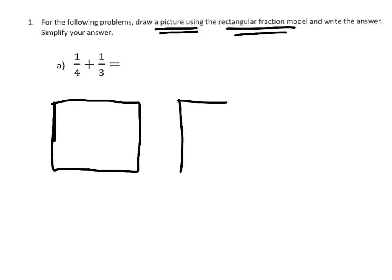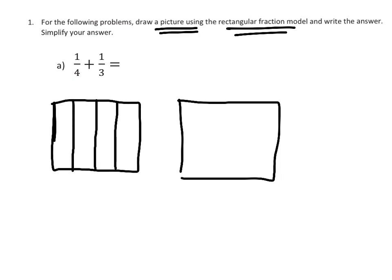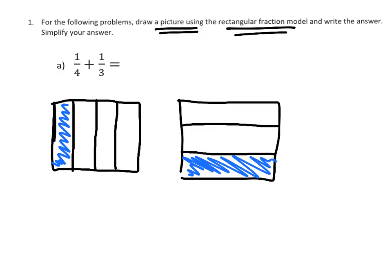I'm going to try and make my two boxes exactly the same. They don't quite look the same, but give me a break — they're pretty close. For 1/4, I'm going to cut this into 3 lines to cut it into four equal-sized pieces, and then shade in 1/4. And now for 1/3, I'm going to cut it horizontally, and then shade in 1/3.